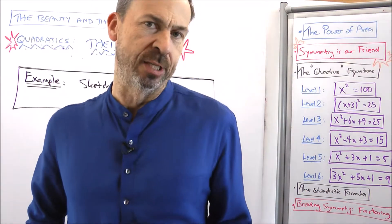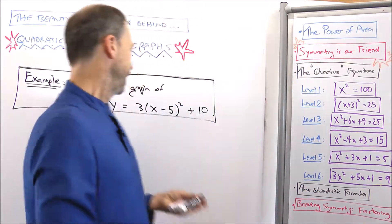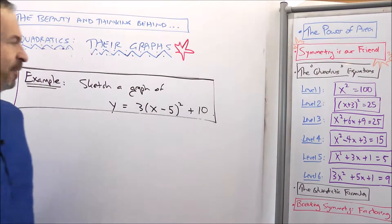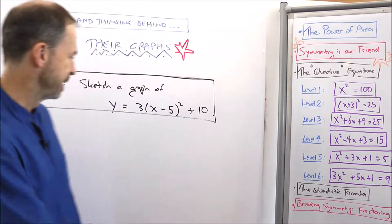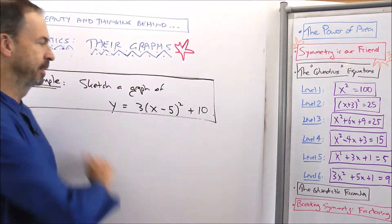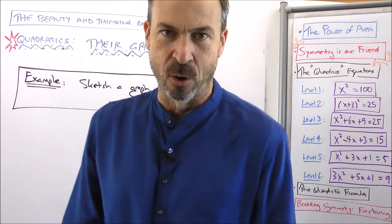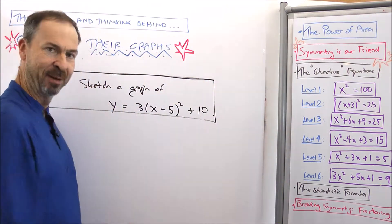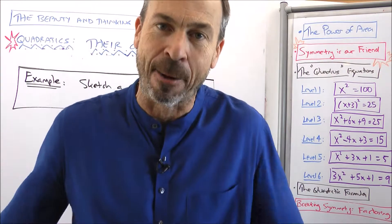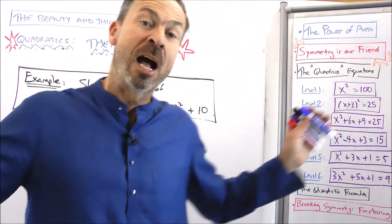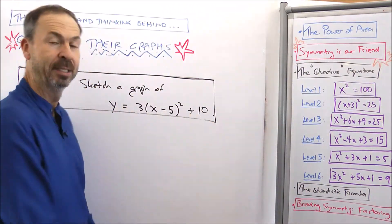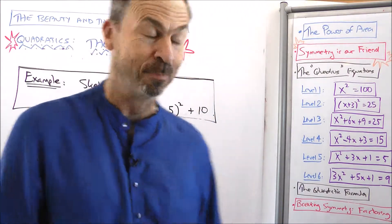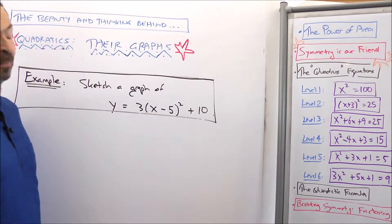Let's do a practice question together. Here's an equation: y equals 3 times x minus 5 squared plus 10. That's a mathematical sentence — we don't know whether it's true or false depending on what one chooses for x and y. Anyhow, let's graph all the data that makes this a true sentence — let's graph that quadratic equation.